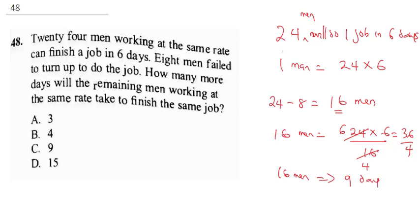The question says how many more days will the remaining men work. 24 men were supposed to do the job, but now 16 men did it. If 24 men can do it in 6 days, 16 men can do it in 9 days, so it will take them 9 minus 6, which is 3 extra days. The correct answer is A.